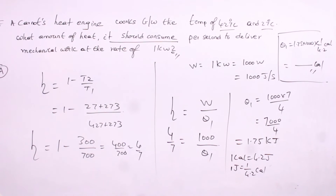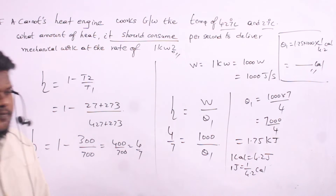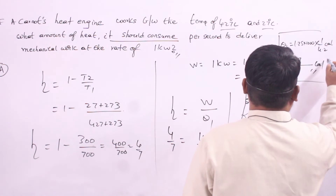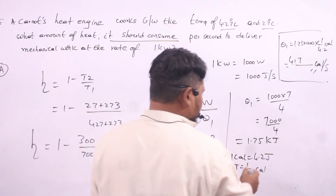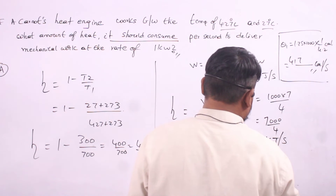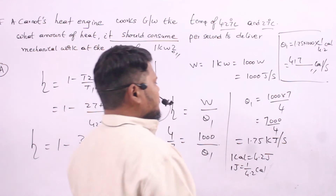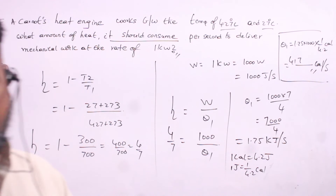The answer in terms of calories is 0.417 kilocalories per second, or you can write it as 417 calories per second. We had joules per second, so the units become kilocalories per second. We should be careful about units.